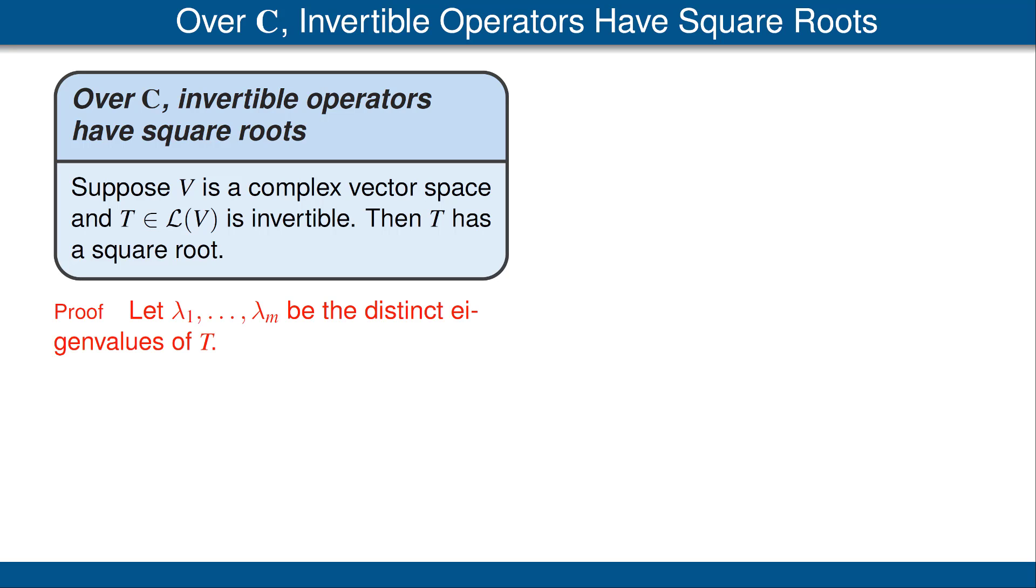Let λ₁ up to λₘ be the distinct eigenvalues of T. For each j, there's a nilpotent operator Nⱼ defined on the generalized eigenspace corresponding to the eigenvalue λⱼ, such that the T restricted to that generalized eigenspace is λⱼ times the identity plus the operator Nⱼ.